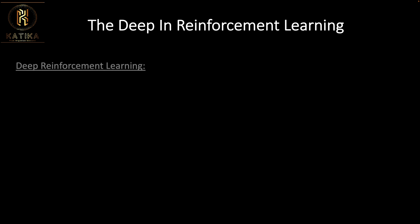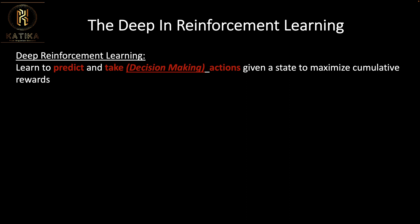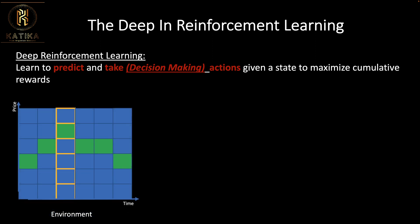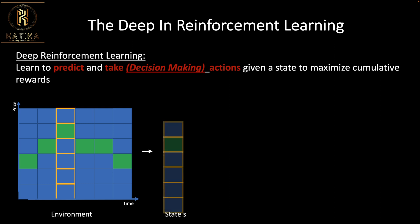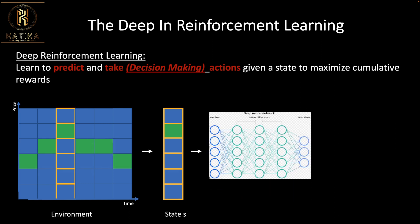In reinforcement learning you always have an environment. The environment produces a state — the state we are currently in. In deep reinforcement learning, when we see a state, we send that state to a neural network to make a decision. A neural network is essentially a prediction machine.